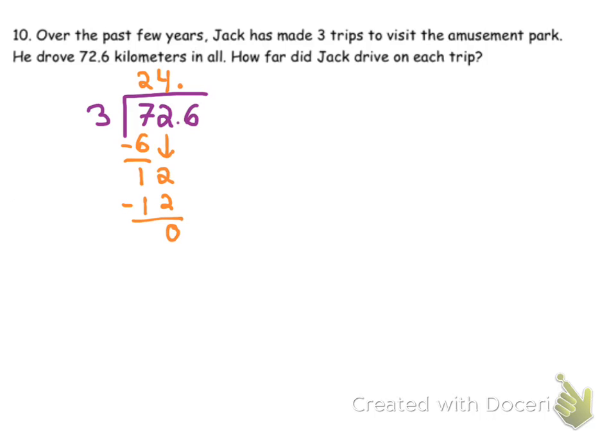I have a remainder of 0. That does not mean I'm done. I still have the 0.6 that I need to look at. So, remainder of 0. We're going to bring down the 6. How many times does 3 go into 6? It goes in 2 times. 2 times 3 is 6.